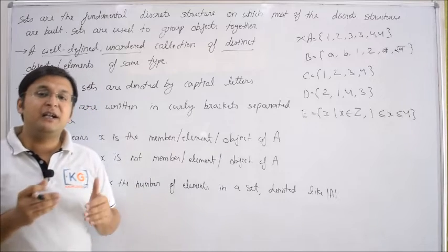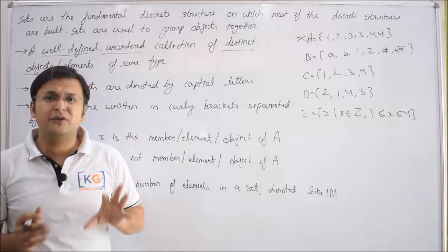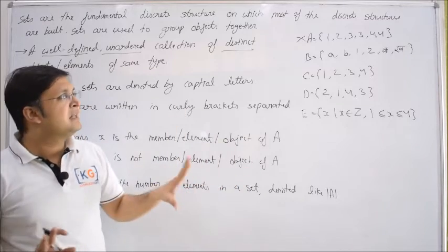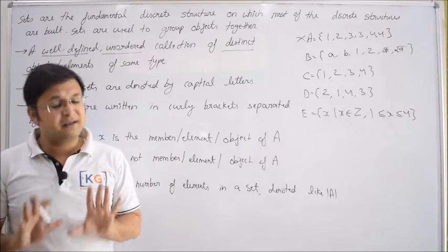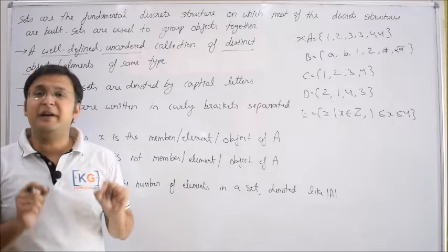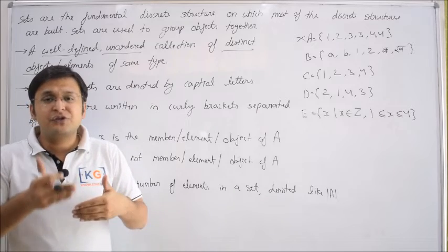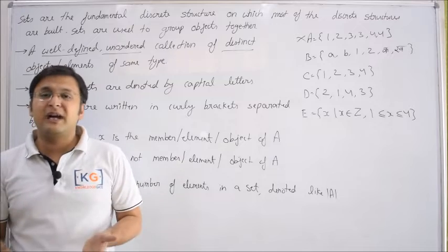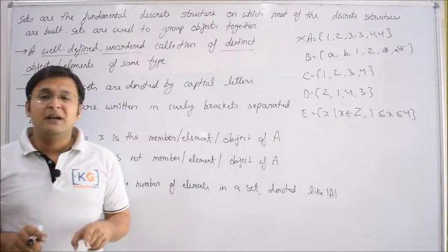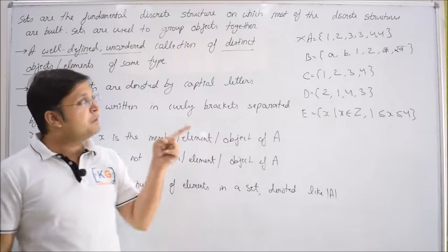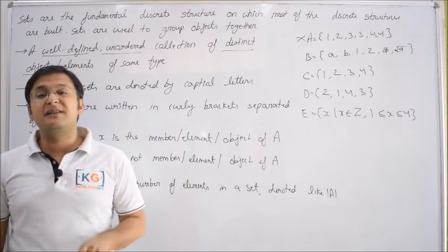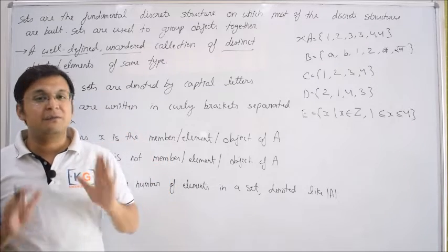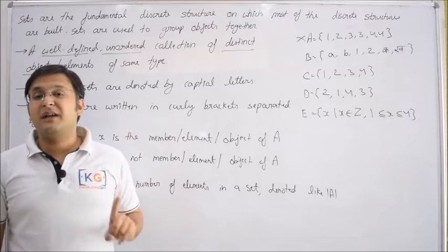Sometimes duplication is allowed, but that is not classical set theory — it is called multi-set theory. In standard set theory, a set may never contain duplication. Even subjects that use sets as a foundation share this property. For example, in a database, a relation is a Cartesian product of a set, and because sets do not allow duplication, a relational table cannot have duplicate rows — two rows cannot be the same.